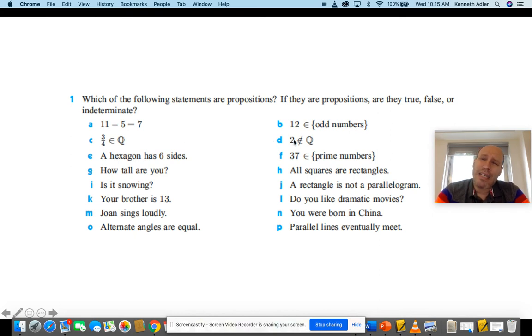What about D? 2 is not an element of the rationals. Well, since I can write 2 as 2 over 1, it is a rational number. Take a look at all of these. Some of it might be a little advanced. See what you can do.